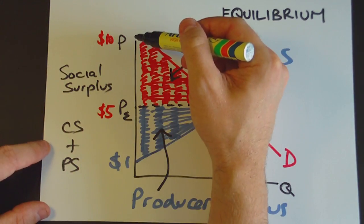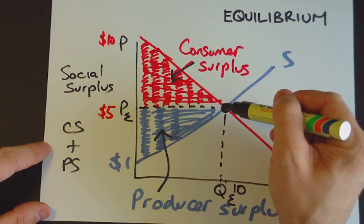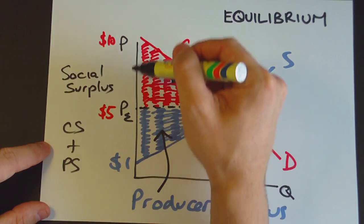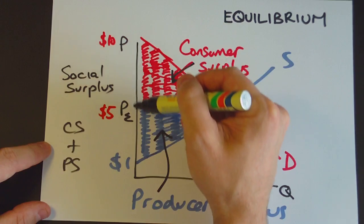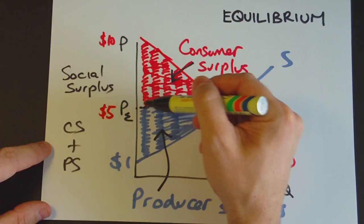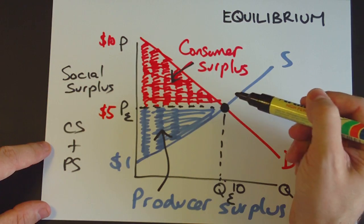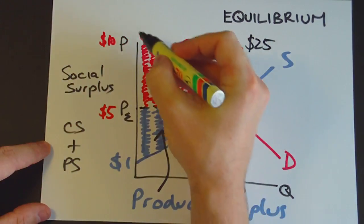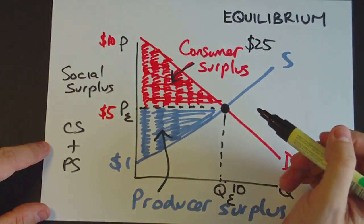Half base times height. So the height here is $5. The base is $10. So half base times height here is going to be $5 times $10, which is $50, times half is equal to $25. So the area of consumer surplus here is $25.